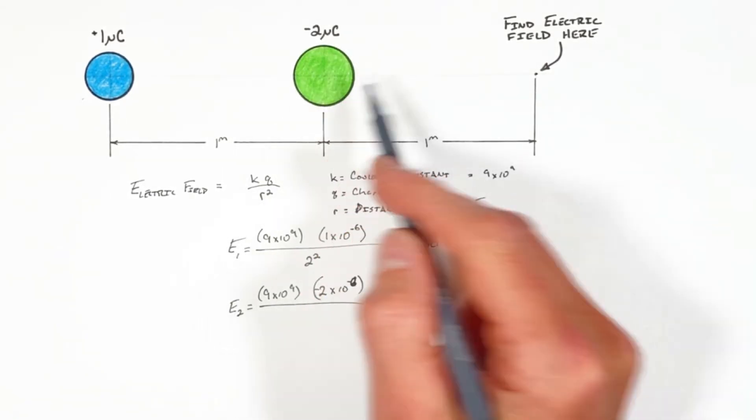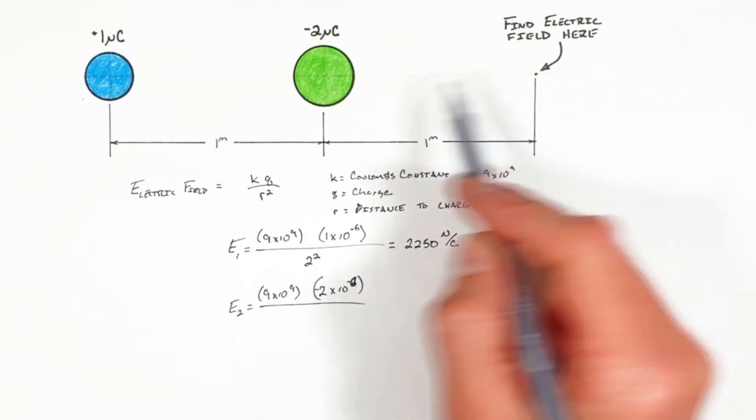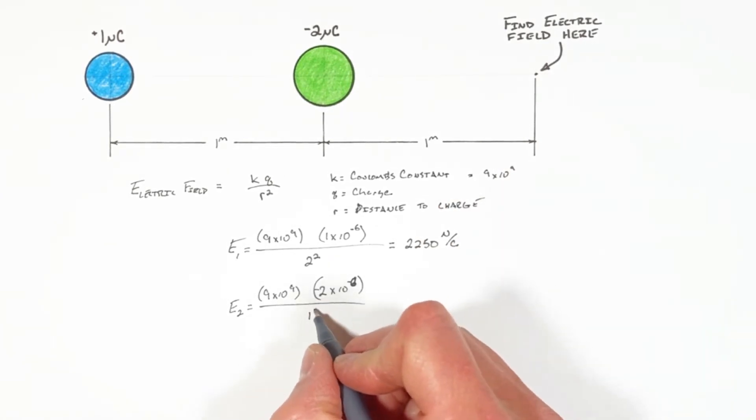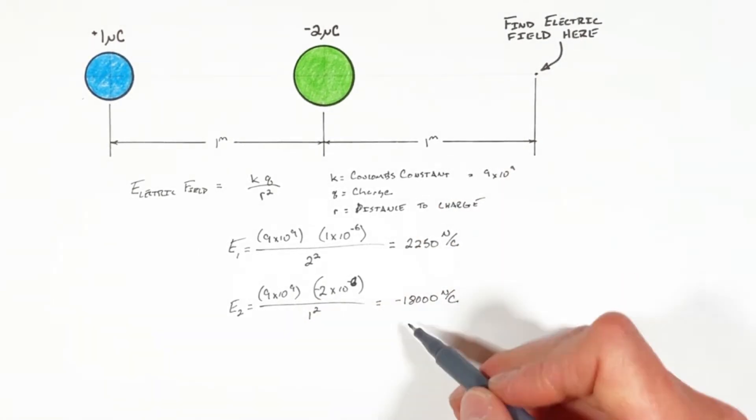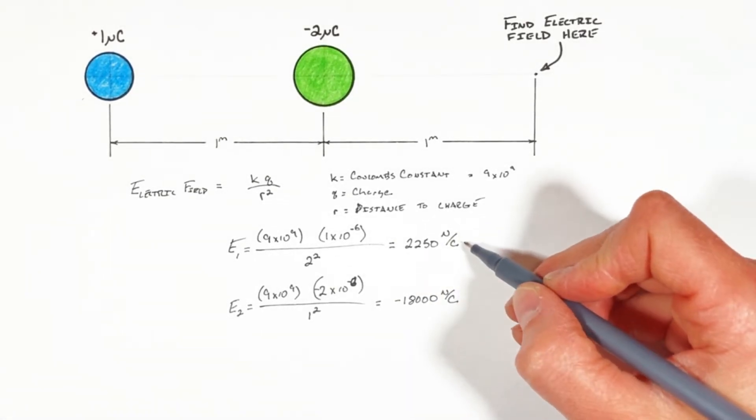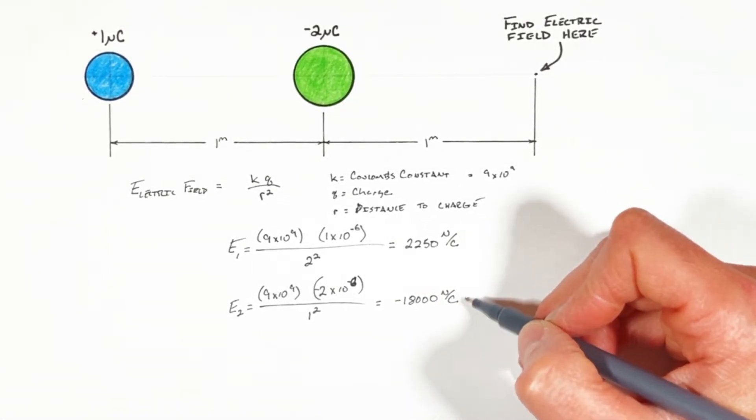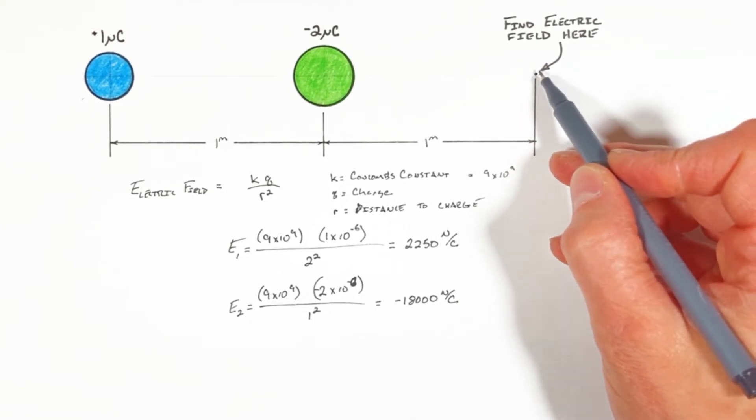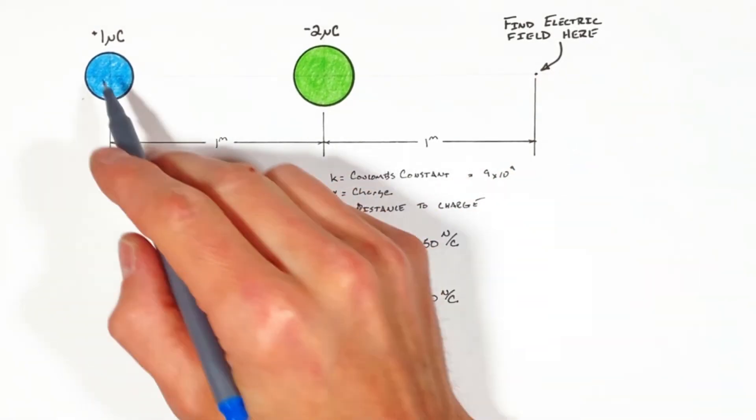Over the distance between this charge and this point we're concerned with, which in this case is 1 meter. And that gives us negative 18,000 newtons per coulomb. So now we know the magnitude of each of these electric fields. Let's take a look at exactly what they're doing at this point here.